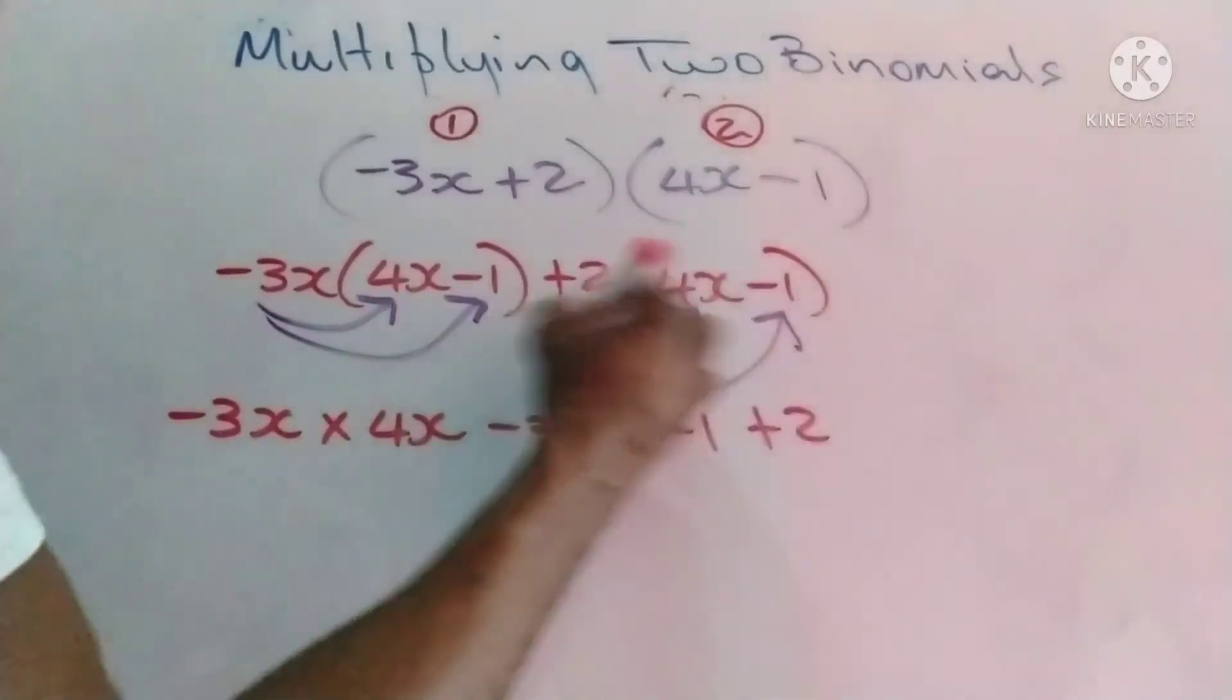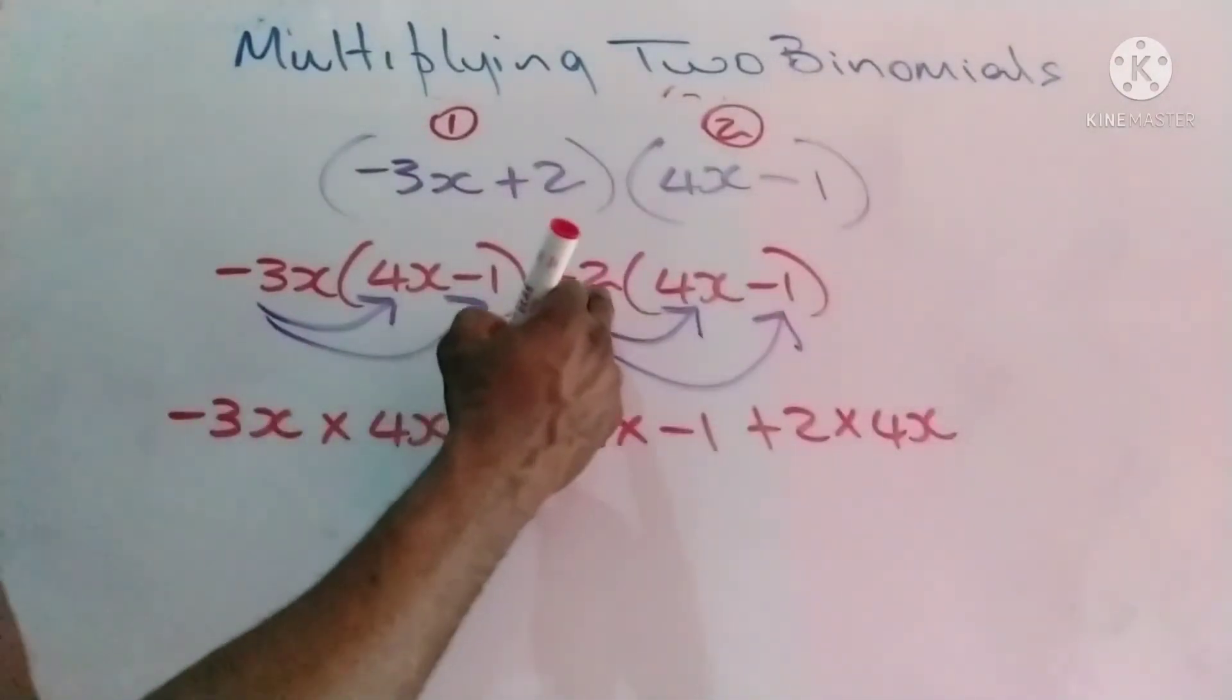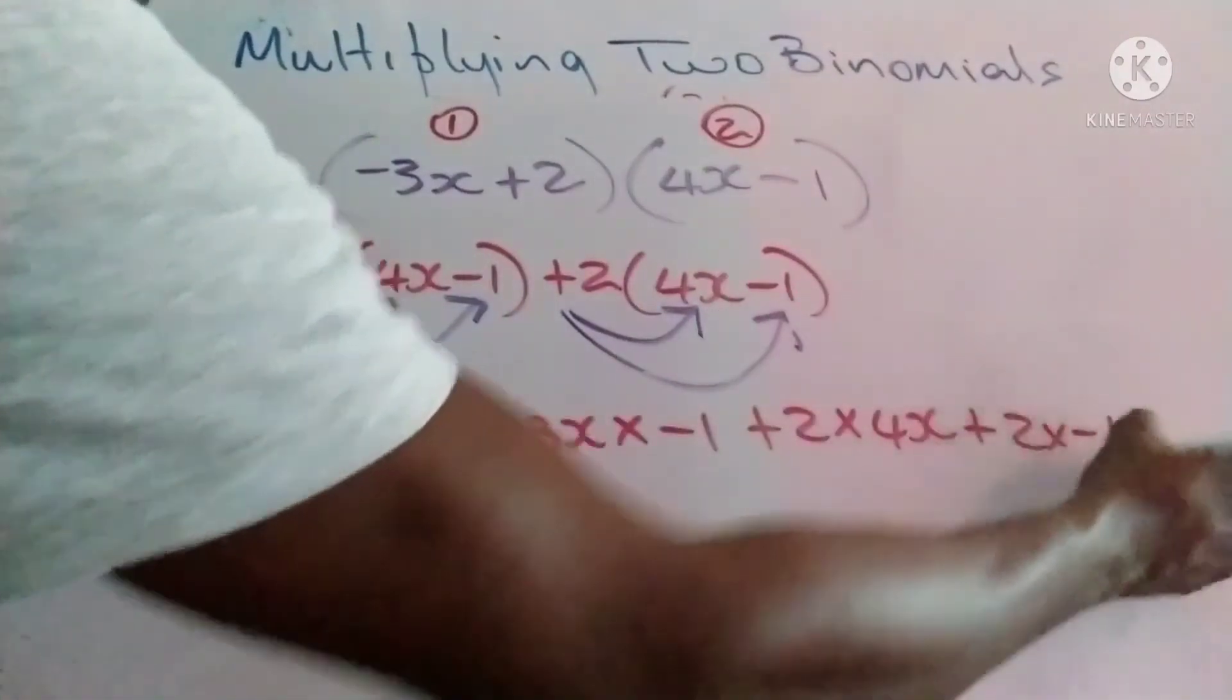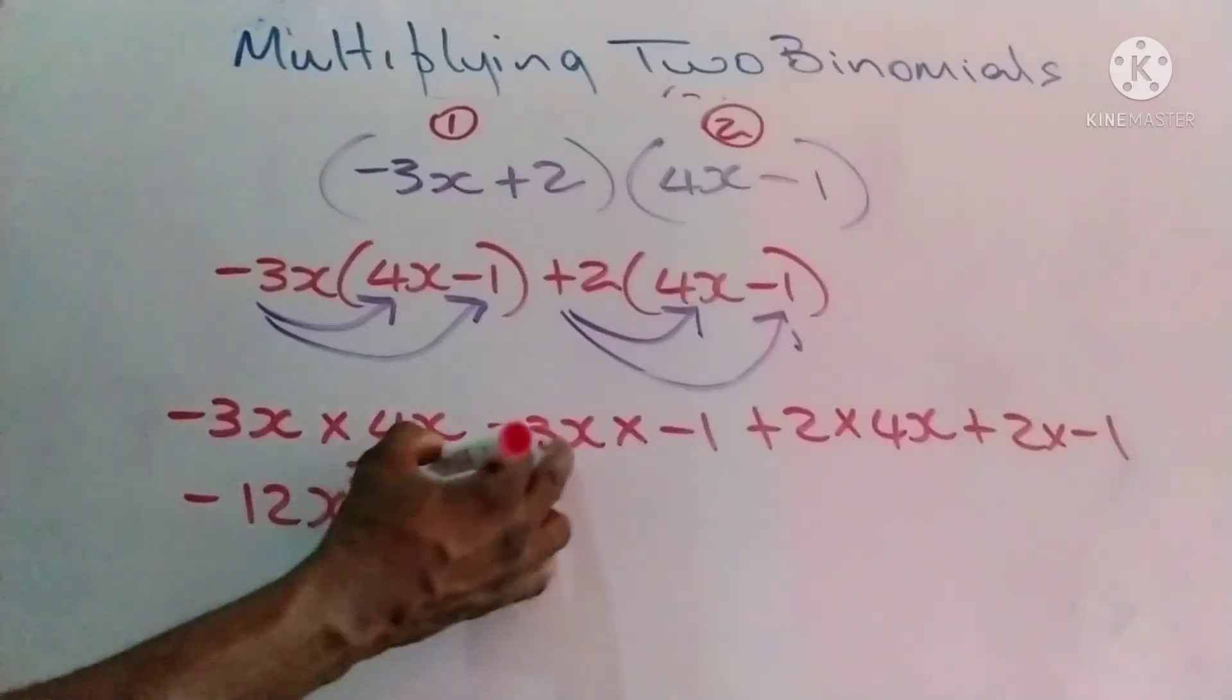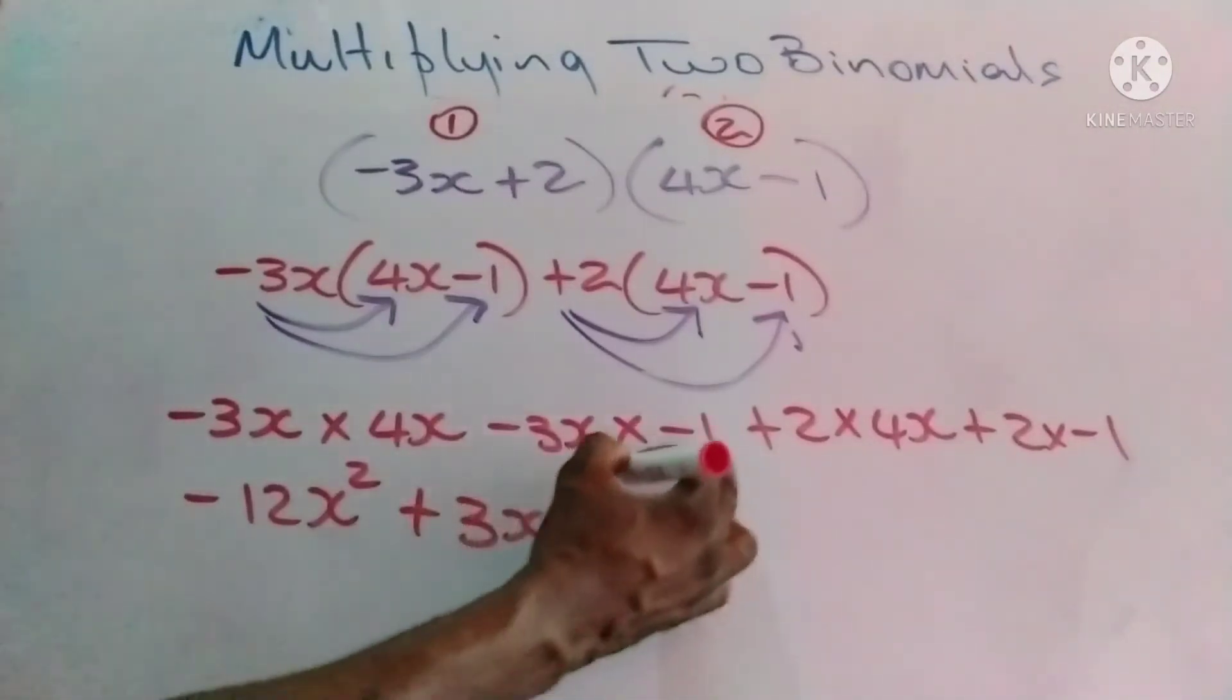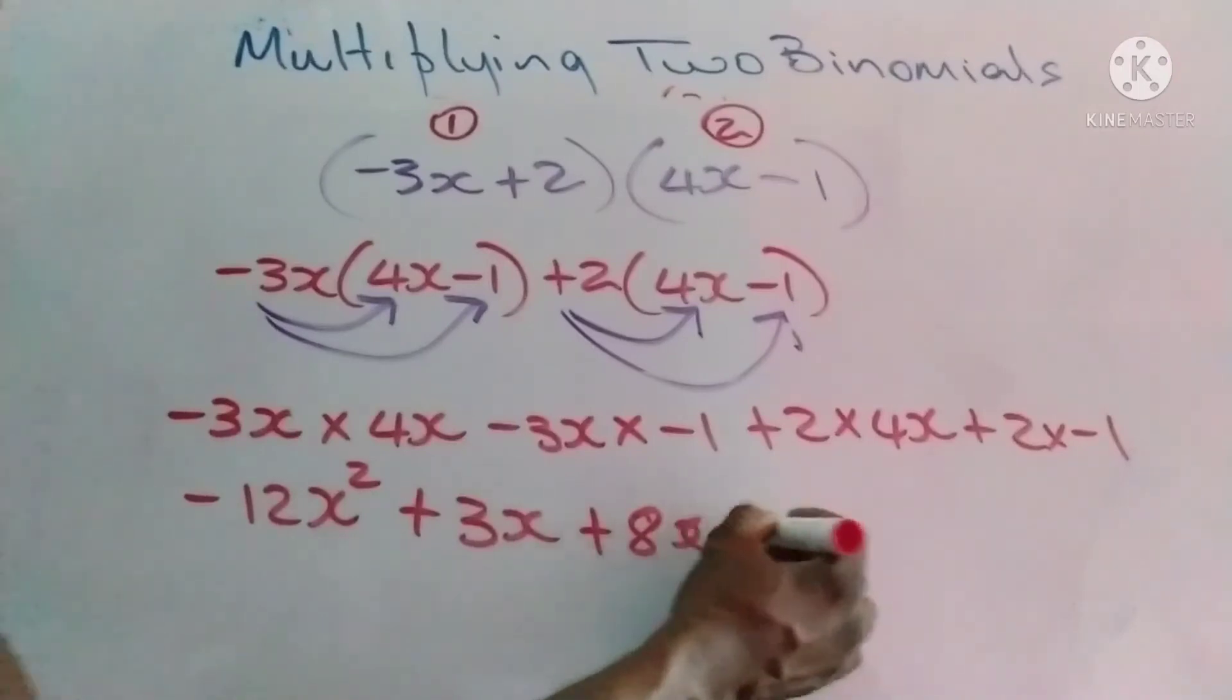Negative 3x times negative 1. Positive 2 times 4x. Positive 2 times negative 1. Let's simplify. This becomes negative 12x². This becomes positive because negative 3 times negative 1, that's positive 3x. Then this becomes positive 8x with a negative 2.